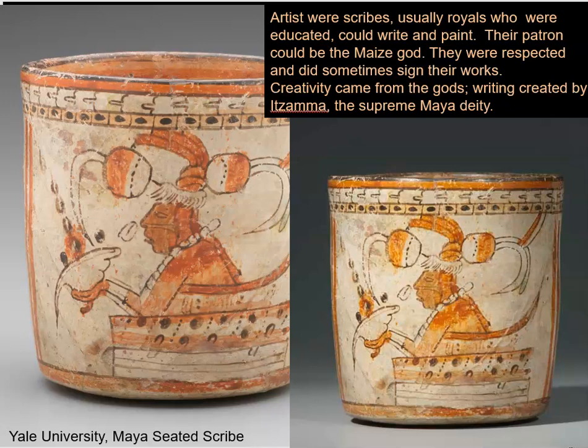Artists were scribes and were usually members of the elite — part of the royal family, perhaps. They were carefully educated individuals who could write and paint. Writing among the Maya was jealously guarded, kept to the domain of the elite as a kind of control. The patron of scribes could be the maize god, but there was also the howler monkey god, associated with being a patron and protector of the arts, including sculpture, painting, music, and dance.